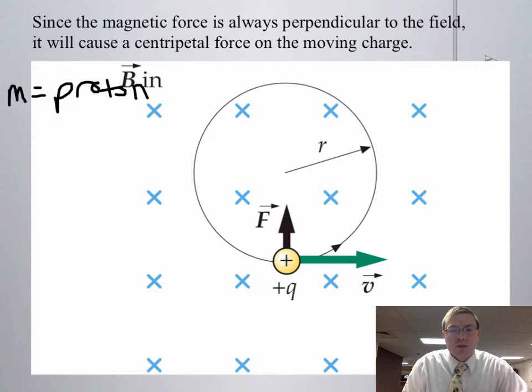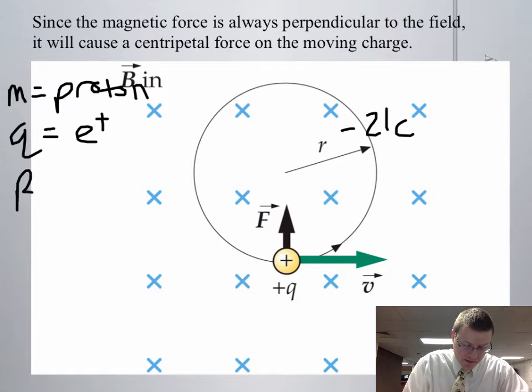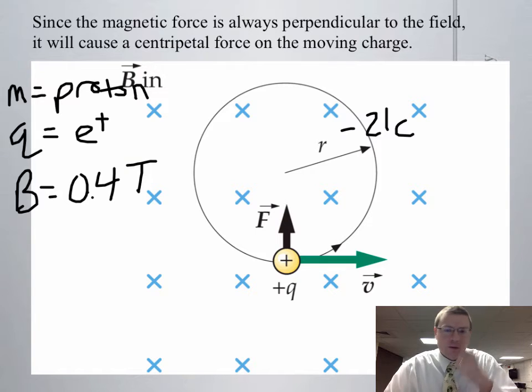Let's say that charge is a proton, so we can look up the mass on your equation sheet. The charge of a proton is positive 1.6 times 10 to the negative 19. Let's say this radius here is 21 centimeters, and it's in a magnetic field that is 0.4 Teslas. So we know a lot of information. The question would be, how fast is this charge moving? How long does it take to go around the circle?